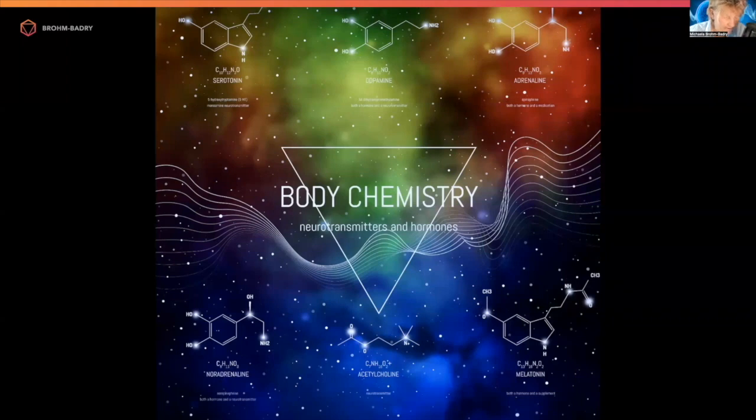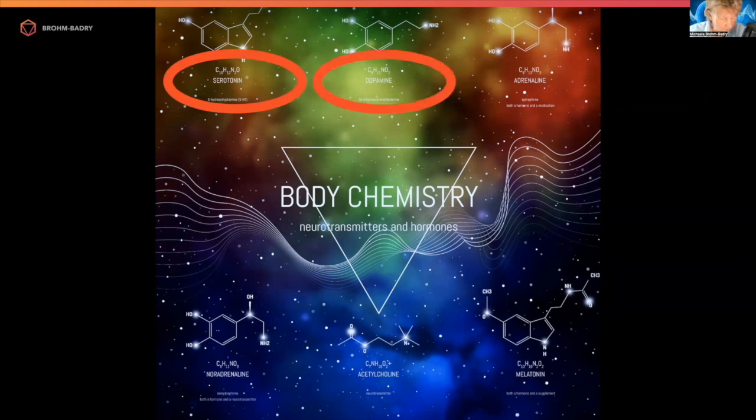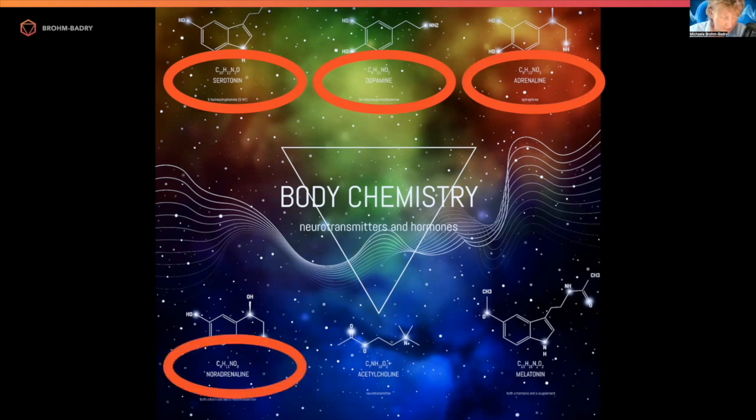Acetylcholine plays a central role in these processes. The most important neurotransmitters and hormones are: serotonin for satisfaction, dopamine for excitement and reward effects, adrenaline mobilizes energy reserves during stress, noradrenaline increases attention or alertness, melatonin regulates sleep-wake rhythm, and acetylcholine facilitates learning and memory formation.